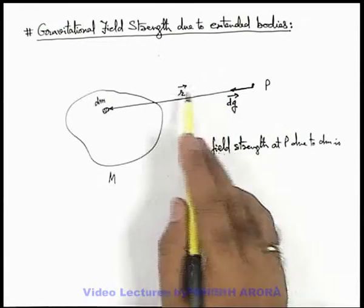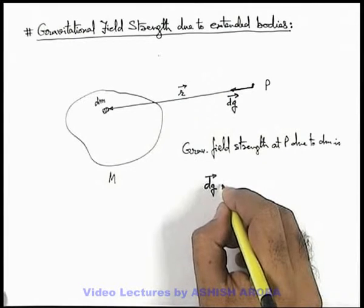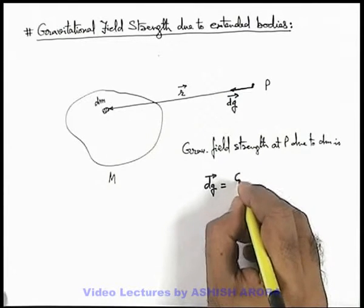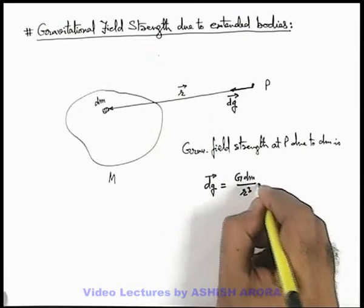As dg vector is along the direction of position vector of this elemental mass dm, this can be written as G dm by r cube into r vector.